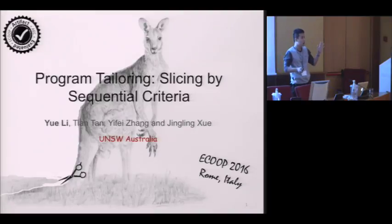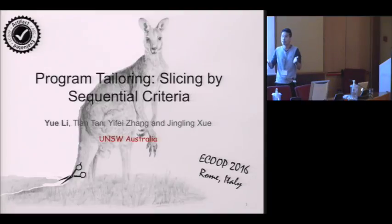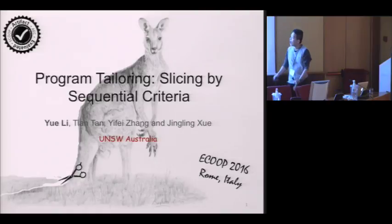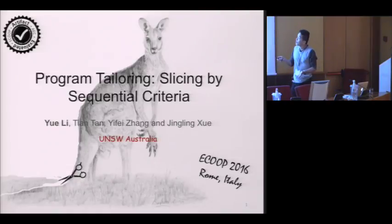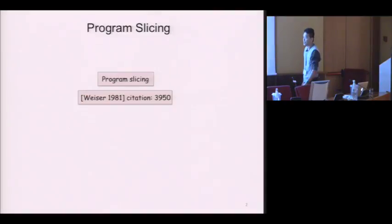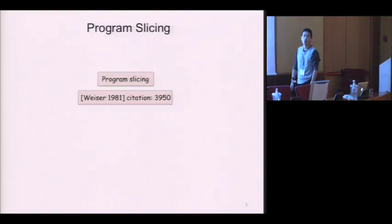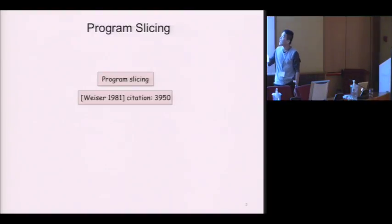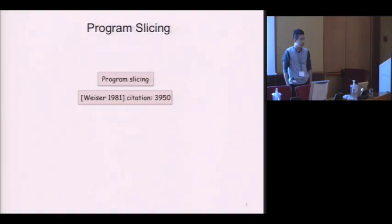The first question might be: why do we need a new program slicing technique? Or we can say, does program slicing matter? The answer is yes. Program slicing was introduced in 1981, and now it has about 4,000 citations.